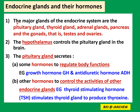The major glands of the endocrine system are the pituitary gland, thyroid gland, adrenal glands, pancreas, and the gonads — meaning the reproductive organs, the testes and ovaries. The testes produce sperms and the ovaries produce ova, but both are also endocrine glands that secrete the sex hormones. The hypothalamus is the structure in the brain that controls the pituitary gland, and in turn the pituitary gland controls the other endocrine glands.